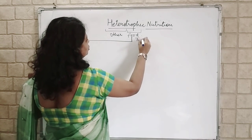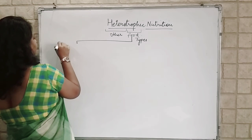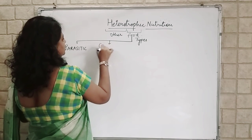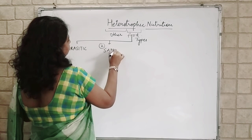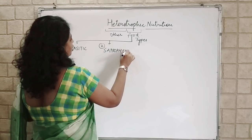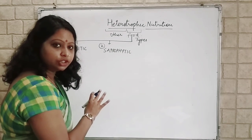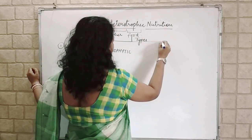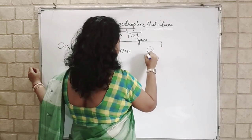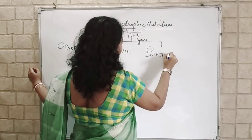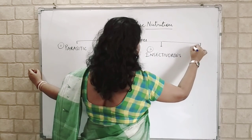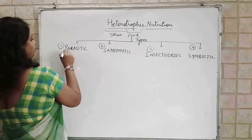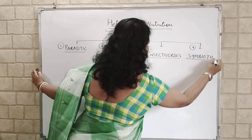There are four types of Heterotrophic Nutrition. The first one is Parasitic, the second one is Saprophytic, the third type is Insectivorous, and the fourth type is Symbiotic. Draw a column in your copy and learn it this way — it will be easier for you to learn.